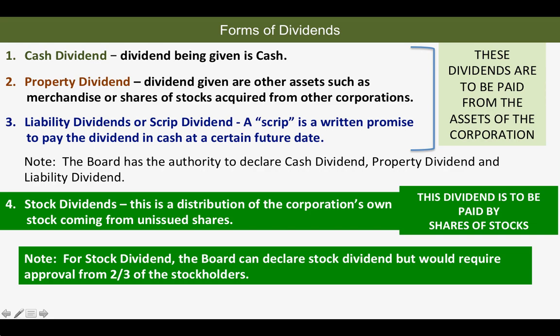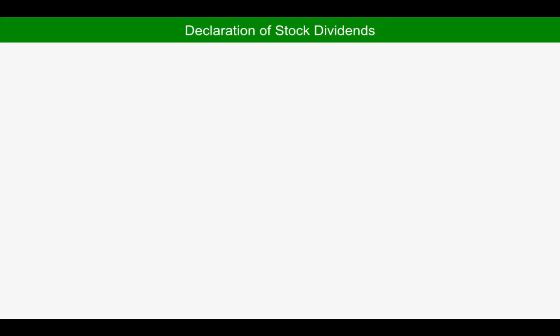Why is approval from stockholders needed? Because the declaration of a stock dividend will have an implication on the fair market value of the stocks. So there is a need for the board to have affirmation from stockholders.